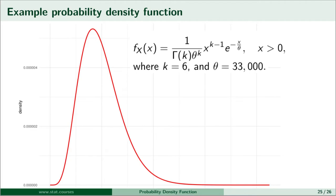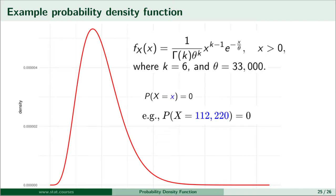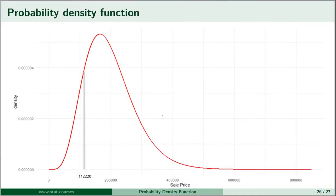This is a continuous random variable, meaning it can take infinitely many values. If a random variable can take one of infinitely many values, the probability of observing a specific value is zero, because that's one of infinitely many values. But I can calculate the probability of observing values close to that specific point — in a small interval that includes that point, I can calculate the probability of observing values in that small interval.